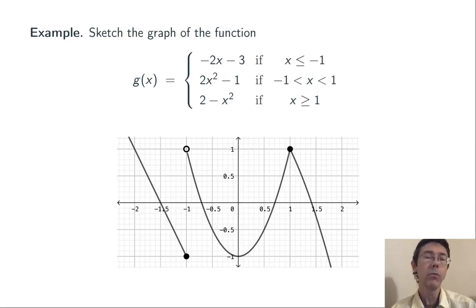Between negative 1 and 1, we have the parabola y equals 2x squared minus 1. I use an open dot, an open circle at x equals plus and minus 1 because we are no longer on that parabola when x is plus and minus 1. In particular, you see that at x equals negative 1.